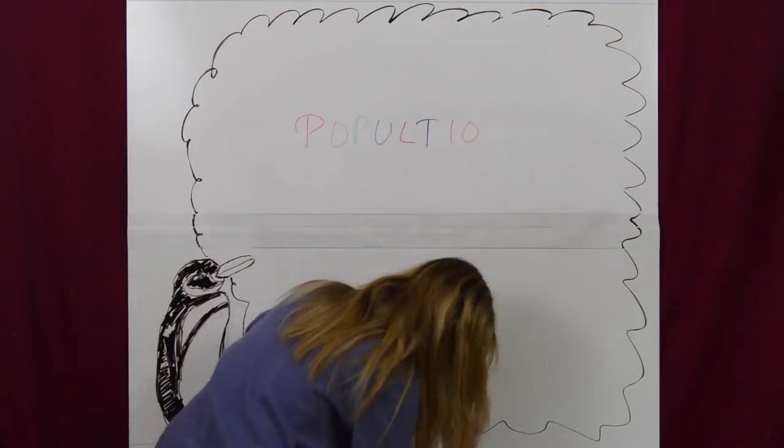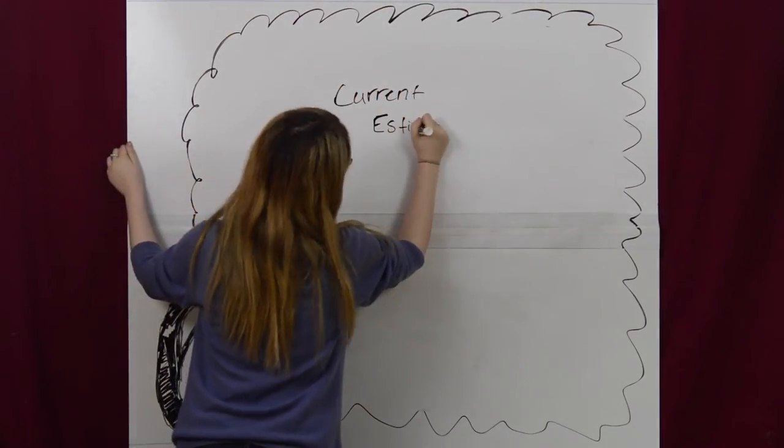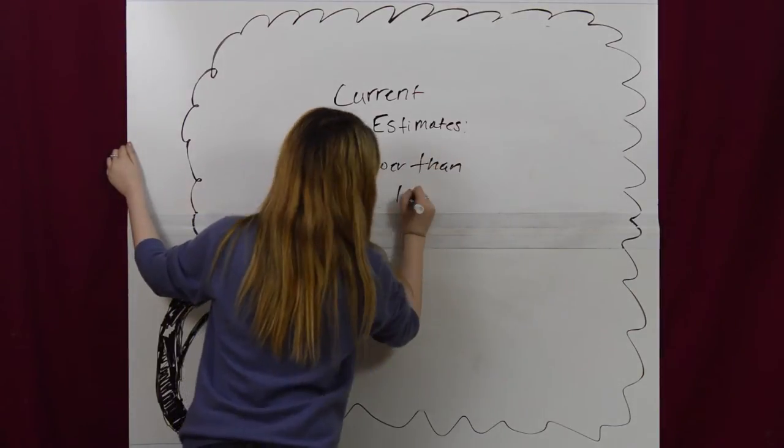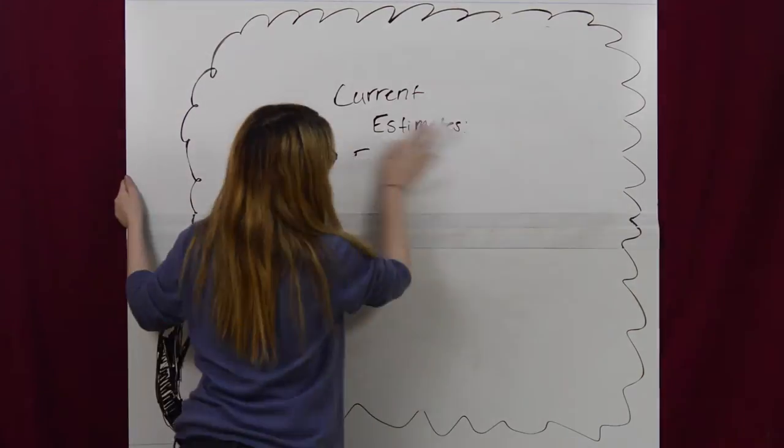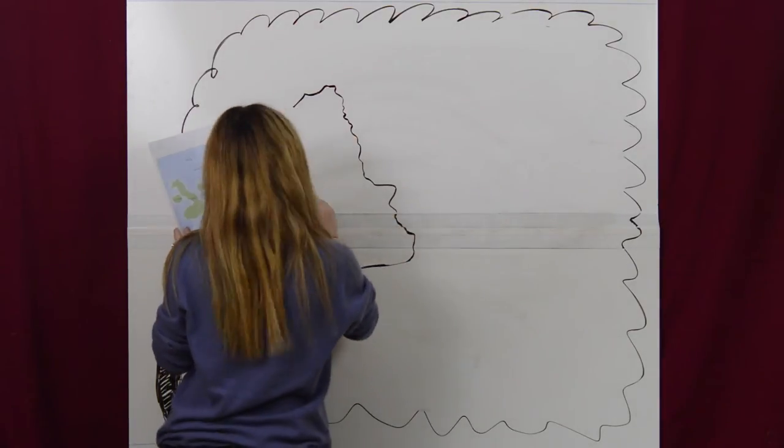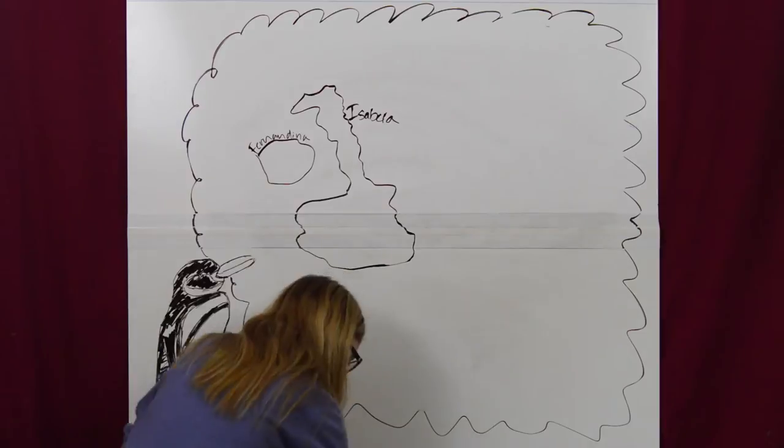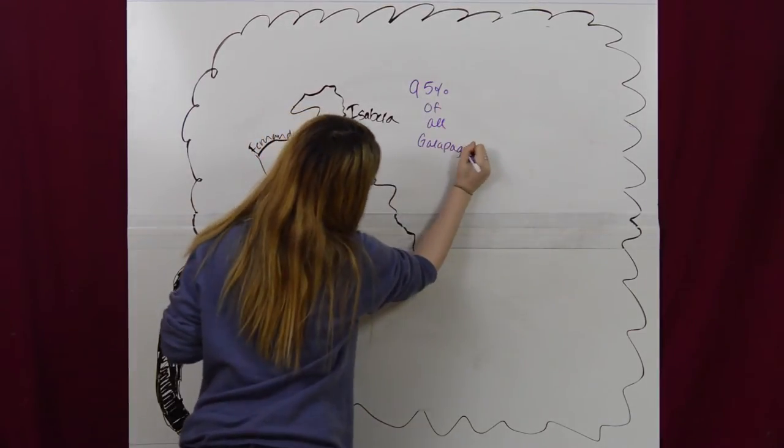The population is thought to number fewer than 2,000 individuals. Approximately 95% of the Galapagos penguins population is found on Isabella and Fernandina islands in the west, with the remaining 5% on Bartolome, Santiago, Floreana, and other islands in the central south area of the archipelago.